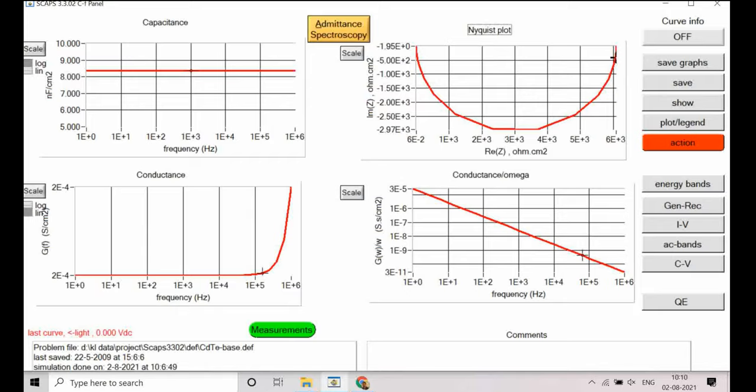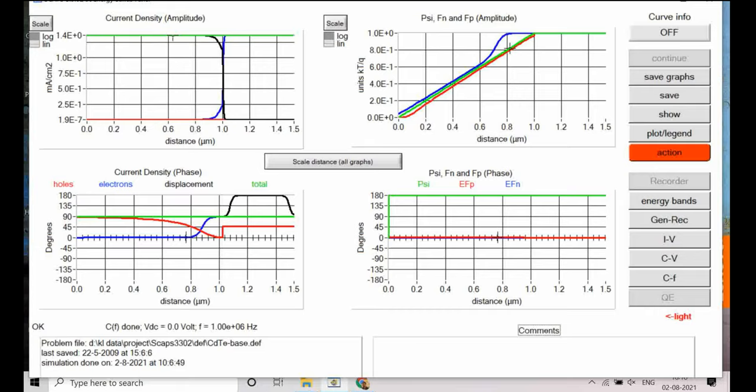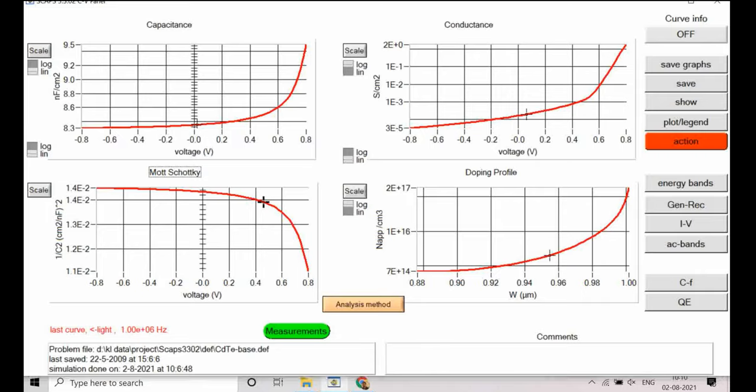I will show you how it is useful for us. And then QE plot we have not simulated out. Then AC plot we can see various type of current density phenomena. Current density like hole density variation, electron density variation, total current. So those things are being shown here in this graph.